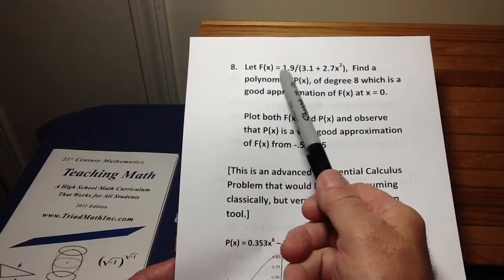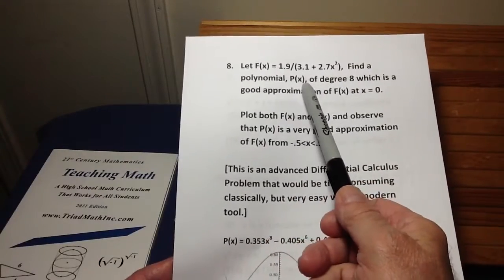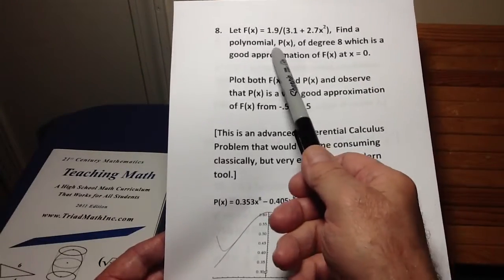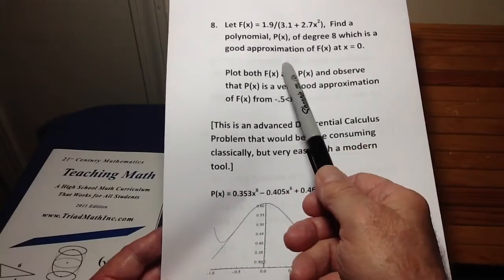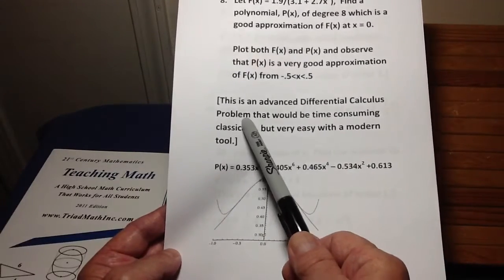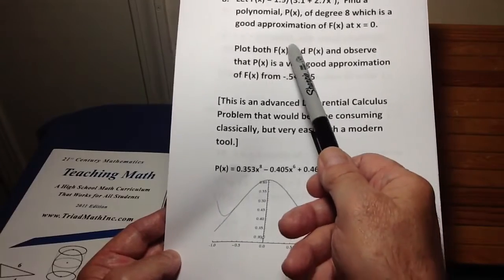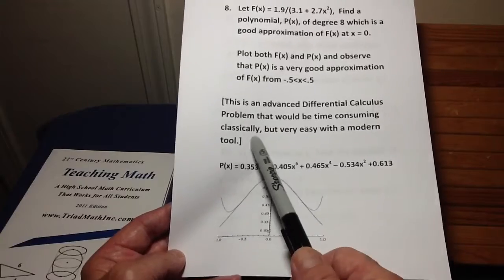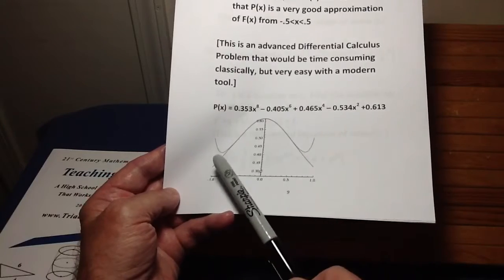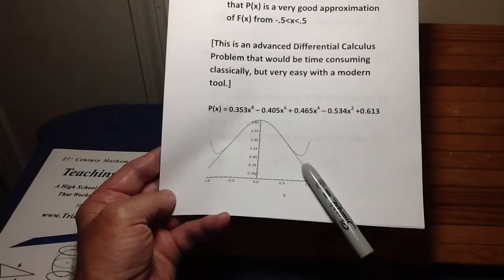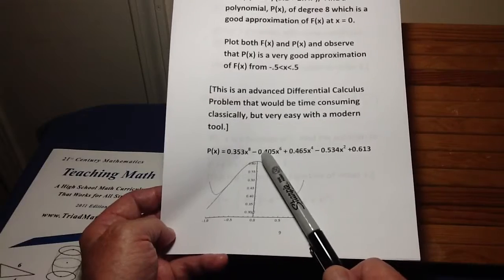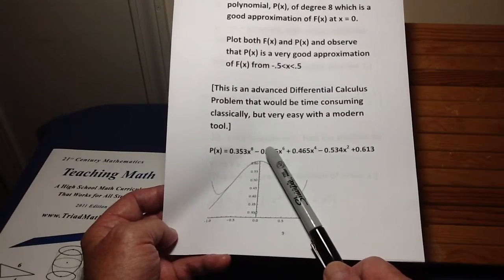In STEM, a lot of times you have a complicated function, and you would like to approximate it with a polynomial. There are reasons to do this in STEM subjects. So the question is, find a polynomial of degree 8 in this example that's a good approximation of this when x is 0. This is an advanced differential calculus problem using what are called series. It's not terribly difficult to do, but it's very time-consuming. It's error-prone. It'd take a long time to do. Wolfram Alpha immediately gives you this 8-degree polynomial. And it plots it. Here's the 8-degree polynomial approximation with the original function. And you can see from minus 0.5 to 0.5 is a very good approximation. You can do this with Wolfram Alpha in less than a minute. It would probably take you 2 or 3 hours to do it manually.